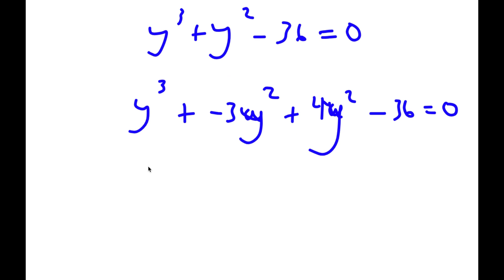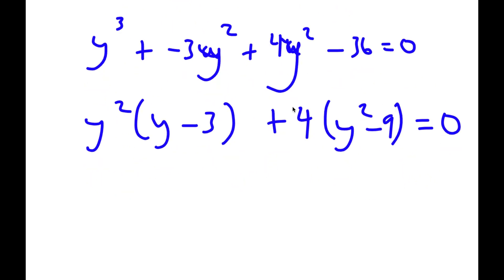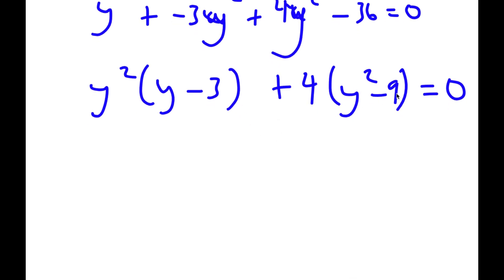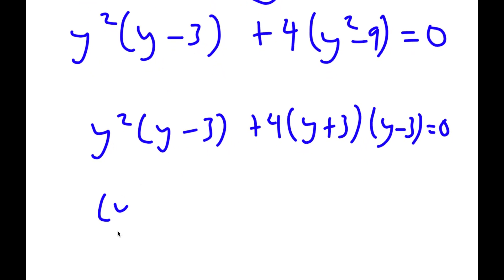From here, if I factor out y squared from y to the power of 3 minus 3y squared, I get y squared times y minus 3. And if I factor out 4 from 4y squared minus 36, I get 4 times y squared minus 9. Now y squared minus 9 is the same thing as y plus 3 times y minus 3.